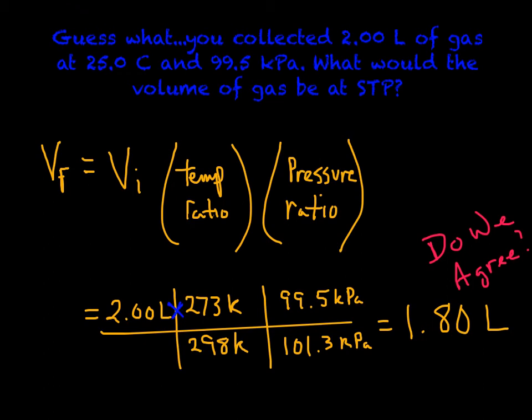What we're going to do is multiply. I'm going to multiply 2.00 times 273 Kelvin times 99.5 kilopascals. And if you have a scientific calculator, I would go divide and then I would make a parenthesis.